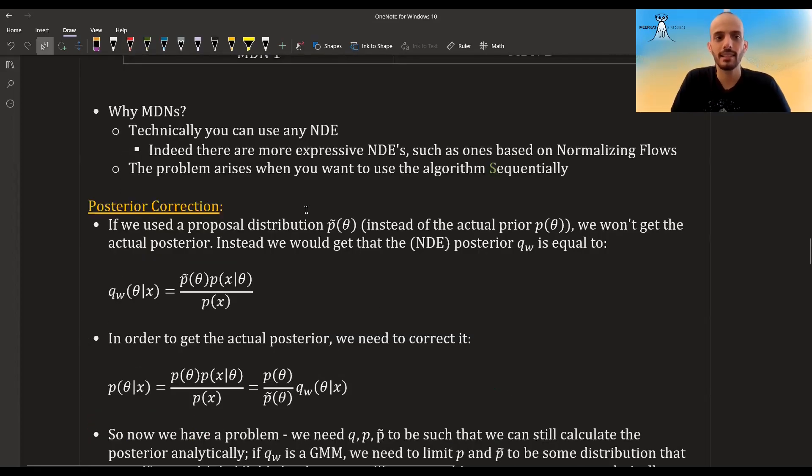Another question we can ask is why use MDNs, and there are also other types of neural density estimators. Indeed, in the first algorithm they had to use MDN for reasons that we will see, but in the next algorithms they overcame the problem, and so actually nowadays you can use any neural density estimator.